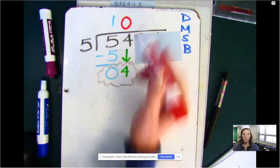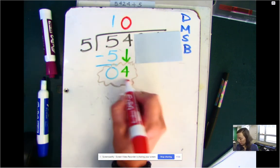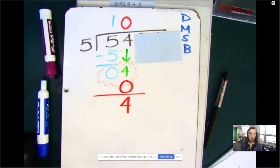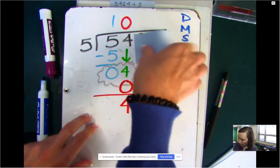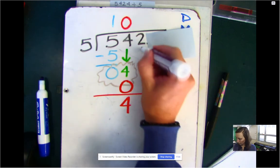It won't go in a whole time. So we put a zero. There's our divide. Our multiply zero times five is zero. Subtract four minus zero is still four. And now we're at the B4. Bring down our next number.